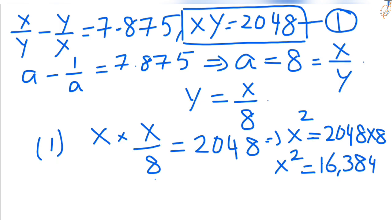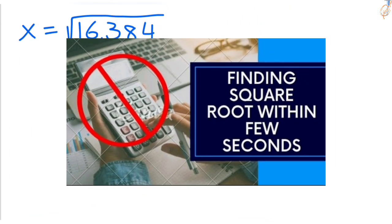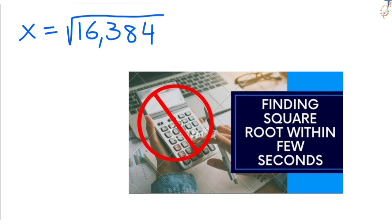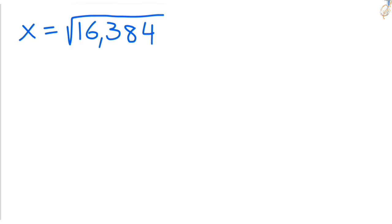Take square roots on both sides, then x equals square root of 16,384. In one of my videos, I explained a quick method of finding square roots. Check it out to understand the technique better. Now I'm using the same technique.